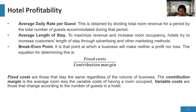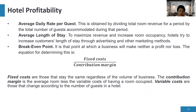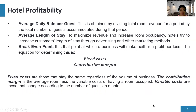Variable costs are those that change according to the number of guests in a hotel. Examples include utility expenses like water — if you have fewer guests, your bills will be minimal, but if you have high occupancy, utility bills will be very high. Variable costs vary depending on the number of guests in a specific period.